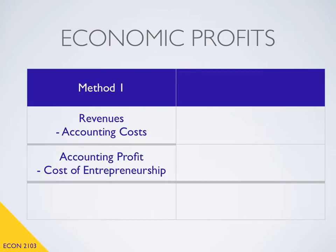Economists like to consider all of the costs and all of the resources that go into the production process: the land, the labor, the capital, and the entrepreneurship. So to an economist, we compute profits by taking our accounting profit and subtracting off the costs of that entrepreneurship. When we do that, we get the economist's version of profit — what we call economic profit. We will use this formula throughout most of the lesson this week to understand what this cost of entrepreneurship really means.